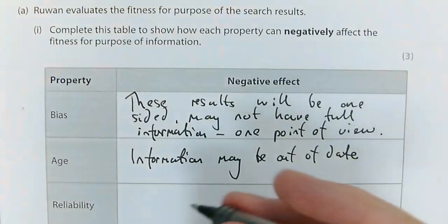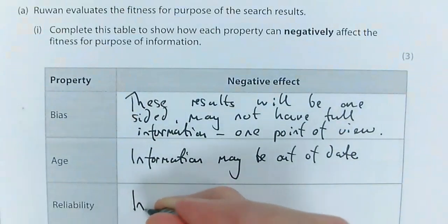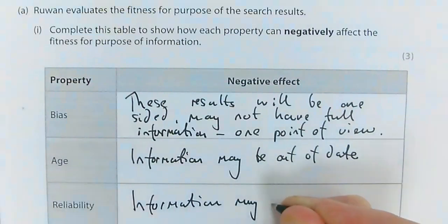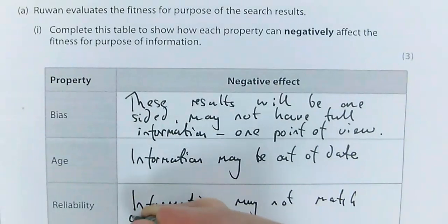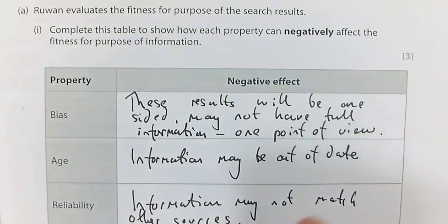Reliability. So information may not match other sources. Reliable means you can trust it. If you're using that for GCSE projects, you need to double-check that with other sources. If it doesn't match up, one or the other is lying, one of those isn't truthful, isn't reliable, so you shouldn't use it.